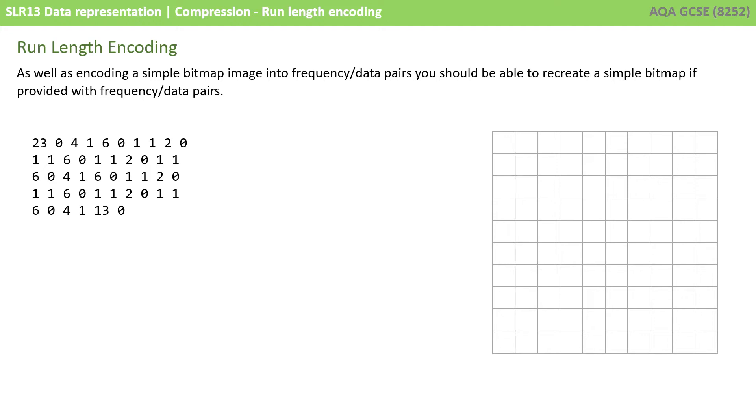As well as encoding a simple bitmap image into frequency data pairs, you should be able to recreate a simple bitmap image if you're provided with a set of frequency data pairs. Here on the left we have a sequence of numbers, and on the right we have a blank grid.